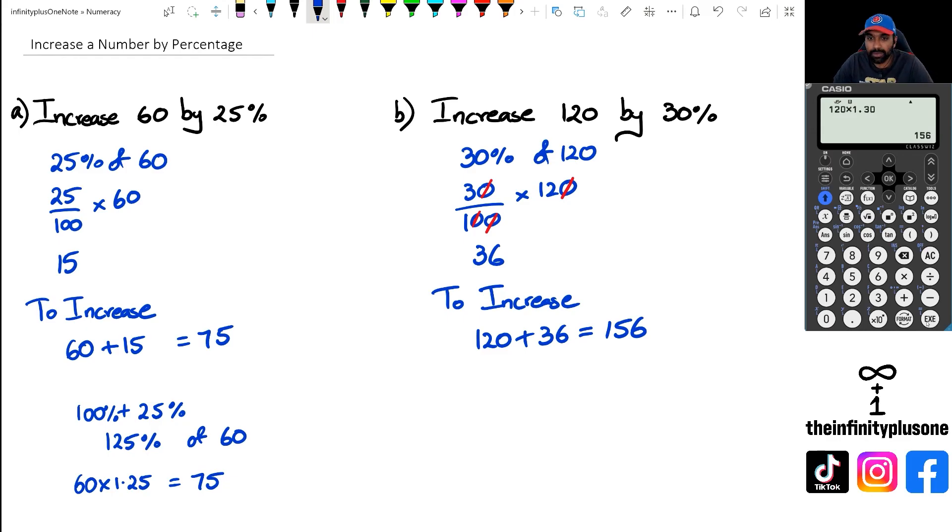So anytime you want to increase a number by a percentage, you just need to multiply that number by 1 point whatever the percentage you're trying to increase by. So if you're trying to increase a number by 65%, then you would multiply it by 1.65, because the 1 is for the 100% and the 0.65 is the 65% that you're increasing by.